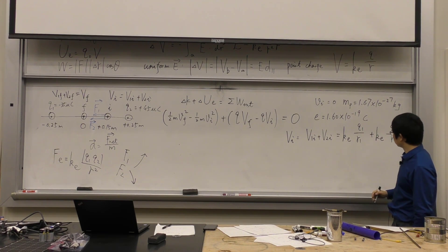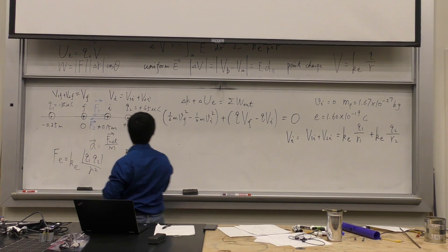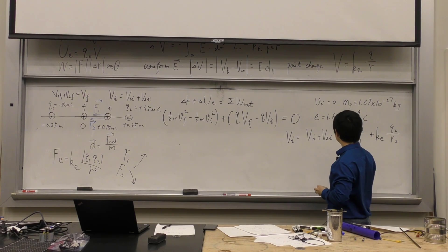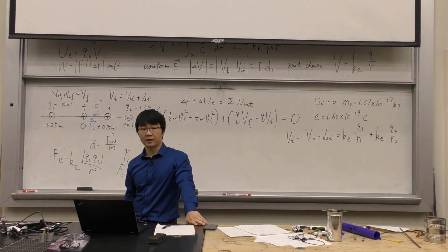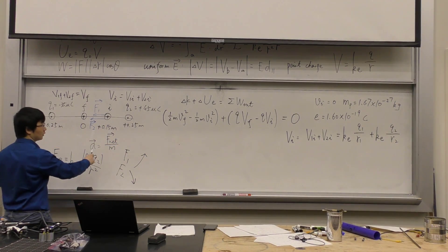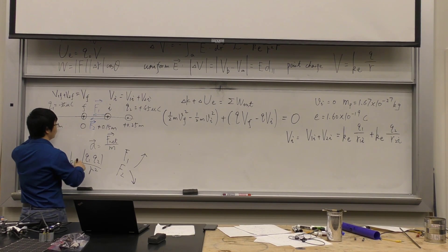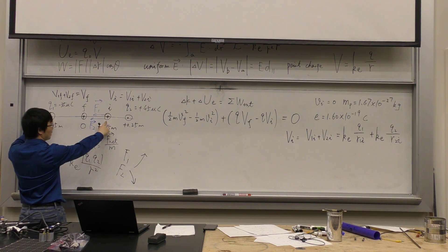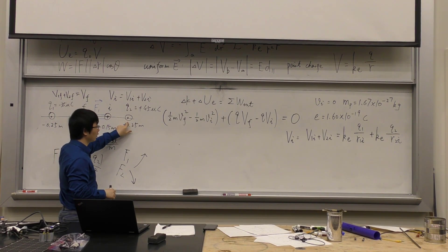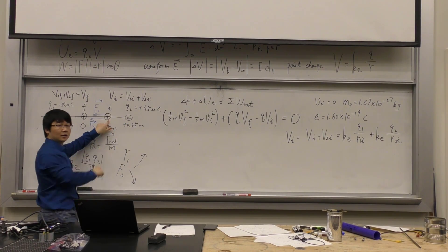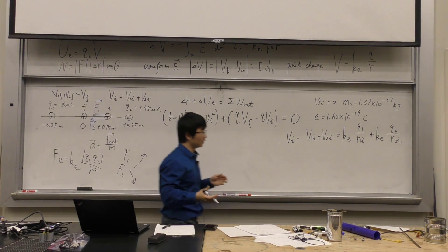The r values are the distances from each source charge to the point of interest. r_1i is the distance from Q1 to the initial point, and r_2i is the distance from Q2 to the initial point. You need to find these numbers based on the positions given. Plug in Q1 as negative, Q2 as positive, and keep all the signs.